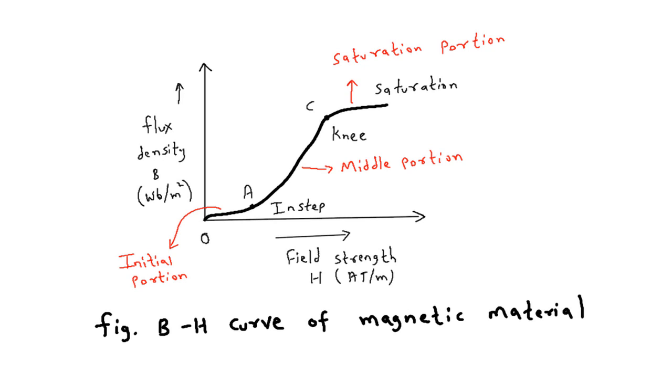Initially, B and H increase slowly, but after the initial step, B increases rapidly. After the knee point, B starts getting saturated. At B max, there is a straight line called saturation. After B max, B will not increase further.